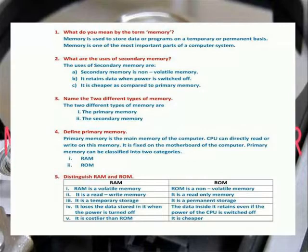The uses of secondary memory are: Secondary memory is non-volatile memory. It retains data when power is switched off. It is cheaper as compared to primary memory.